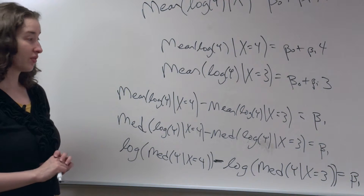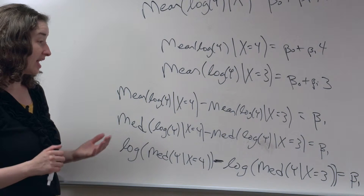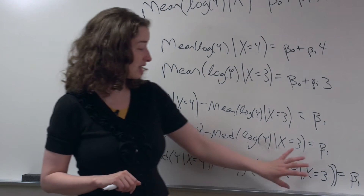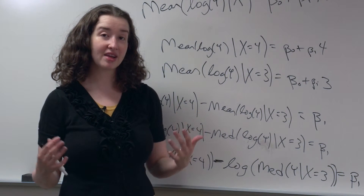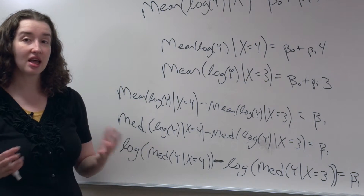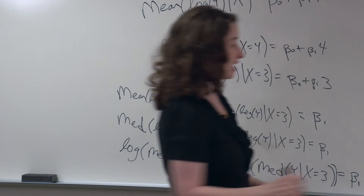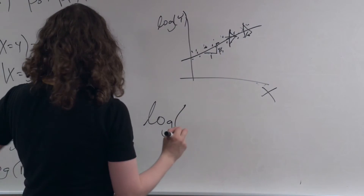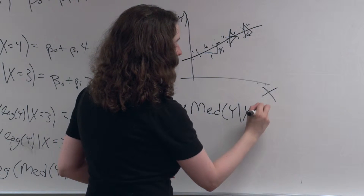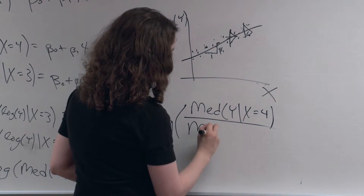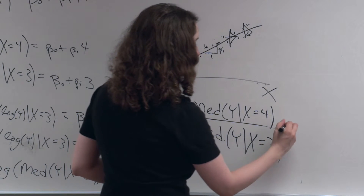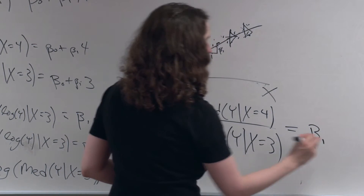I've gone through the same process here that I went through in the context of the t-test. Note that this is the log of a quantity minus the log of another quantity. If we think back to the first time we ever learned about logs, the log of a minus the log of b is the log of a over b. So I'm going to write the log of the median of y given x equals 4, divided by the median of y when x equals 3, and that whole thing is equal to beta 1.